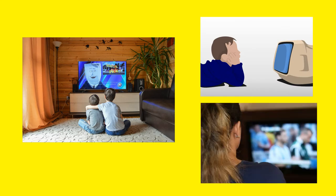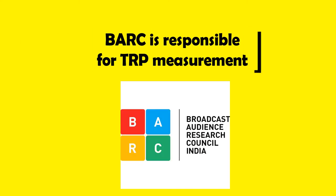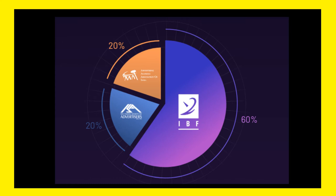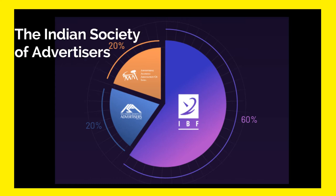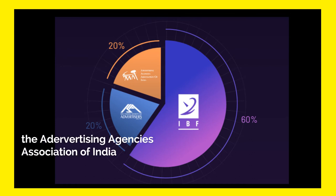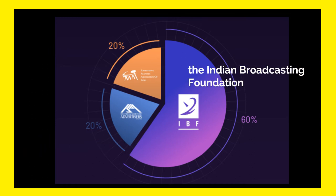What is TRP? In simple terms, TRP represents how many people, of what age, from which socio-economic backgrounds, watch which channels and for how long. The measurement of this data is done by the Broadcast Audience Research Council of India, or BARC. It is jointly owned by advertisers, ad agencies, and broadcasting companies represented by the Indian Society of Advertisers, the Advertising Agencies Association of India, and the Indian Broadcasting Foundation respectively.